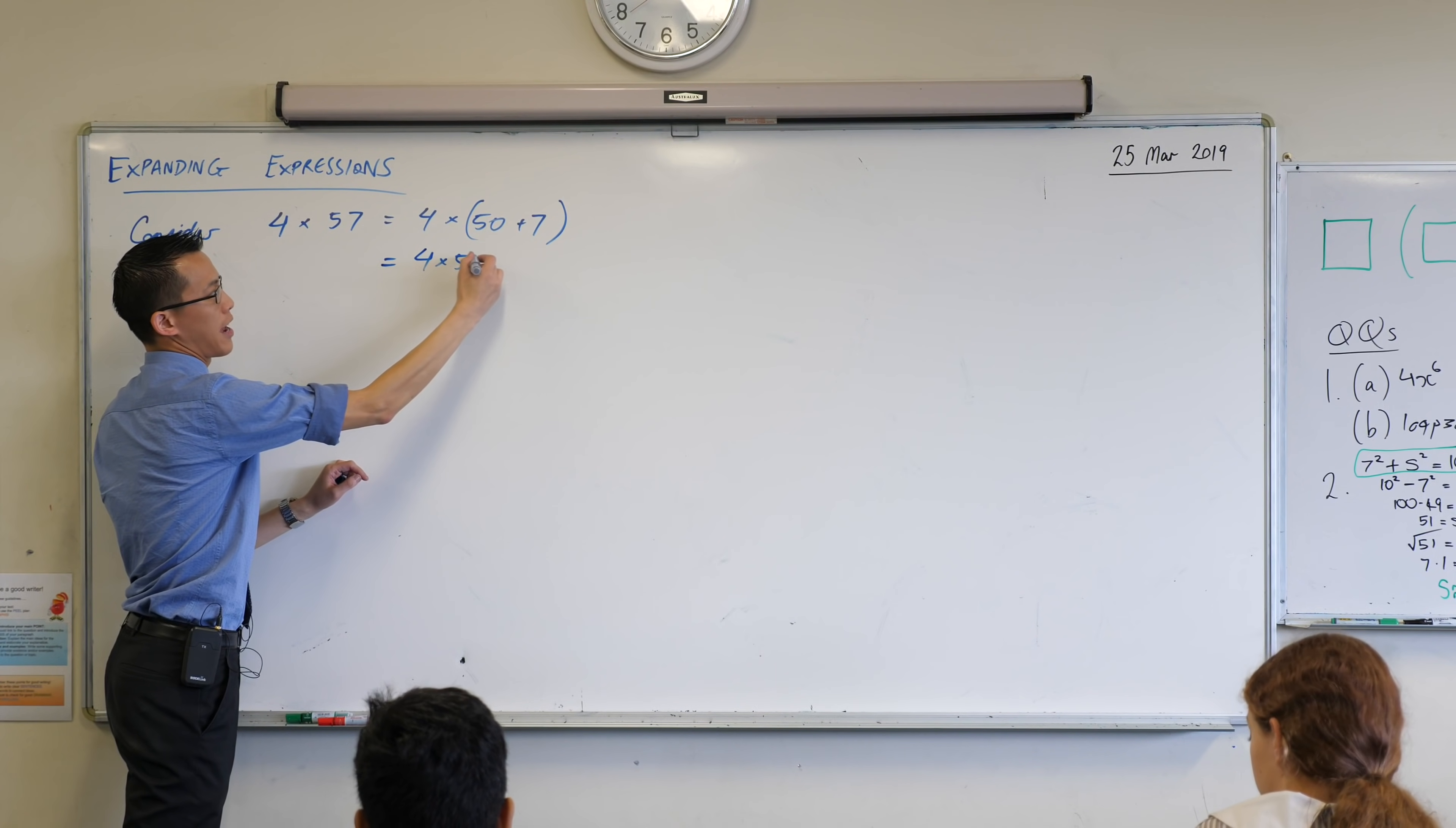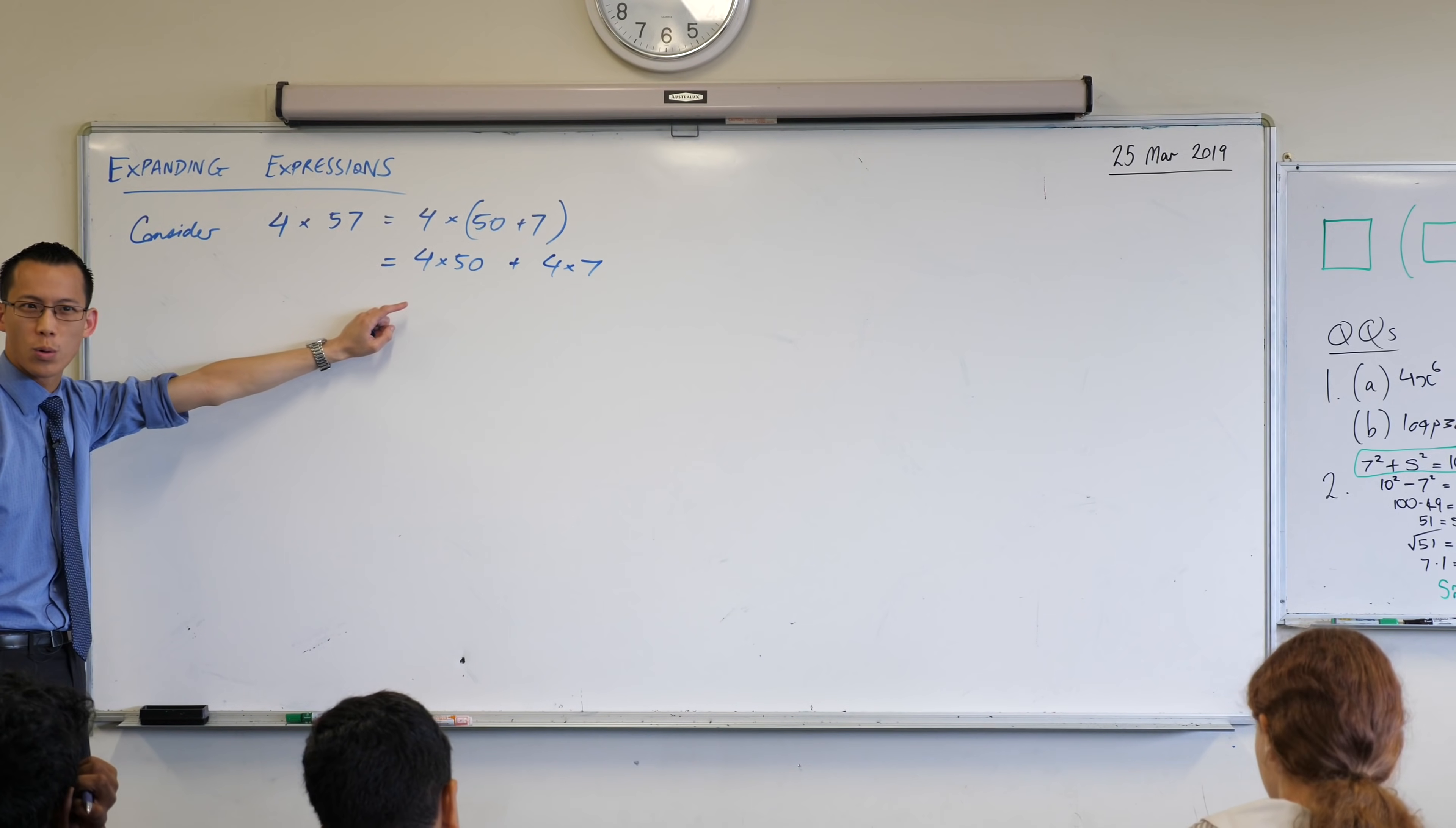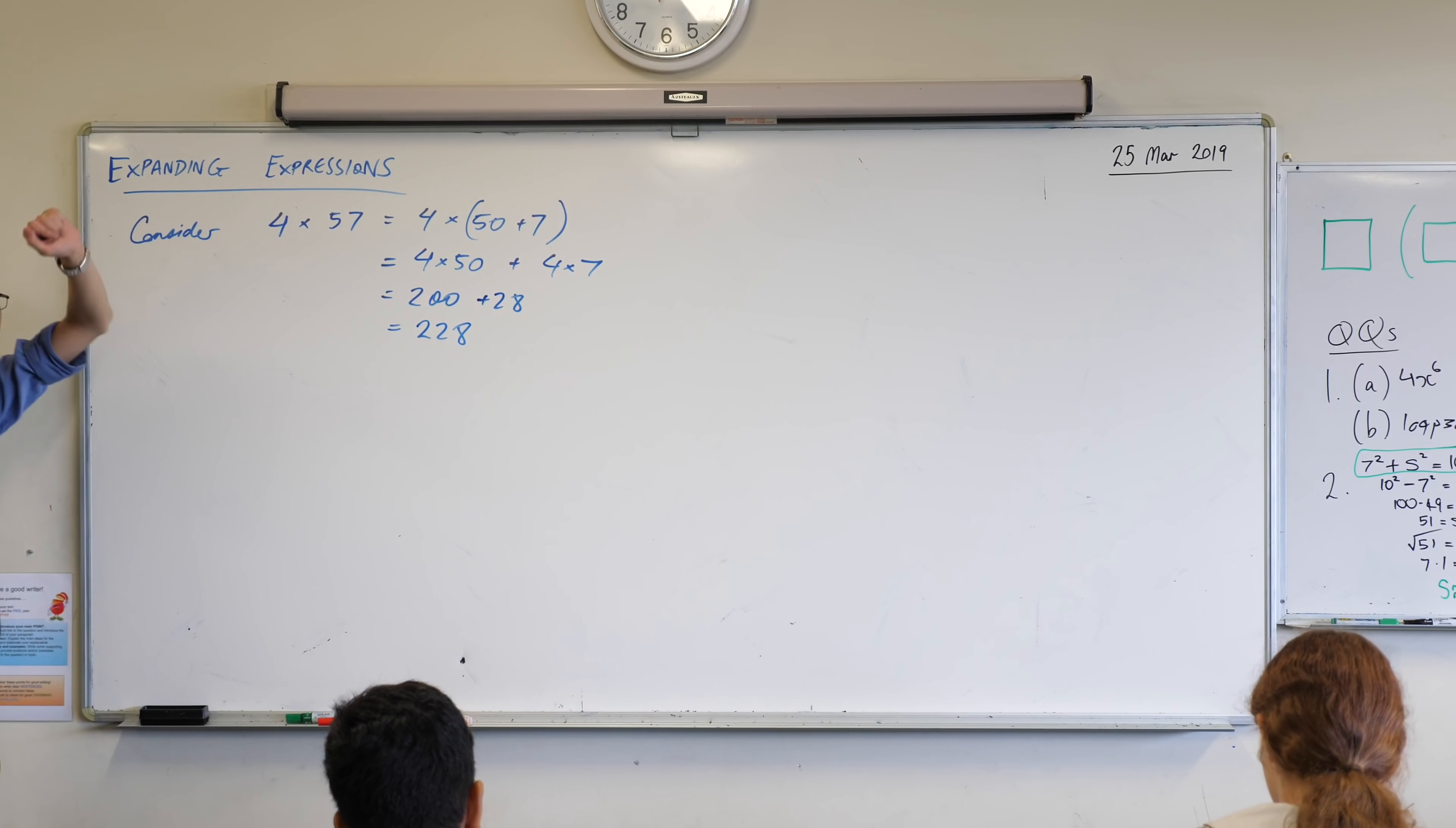So I can say that's 4 times 50 and plus 4 times 7. I'm going to write that in the order that I had it before. Now just pause there. At this point, I think we could probably all do this even without a calculator. Say it all with me, 4 times 50 is 200, and then the 4 times 7 is 28. Very good. So you're like, okay great, I have an answer now, even if I'm not really handy with my 57 times tables.